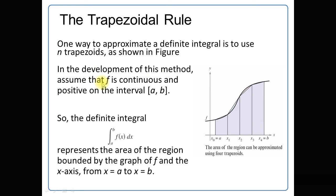In the development of this method, assume that f is continuous and positive on the interval [a, b]. We are going to take the integration of the function from the limit a to b. The function will be continuous and positive on the closed interval from a to b. The definite integral of f(x) with respect to x from a to b represents the area of the region bounded by the graph of f and the x-axis from x = a to x = b. The area of this region can be approximated using four trapezoids, with initial point x₀ = a, then x₁, x₂, x₃, x₄ = b.